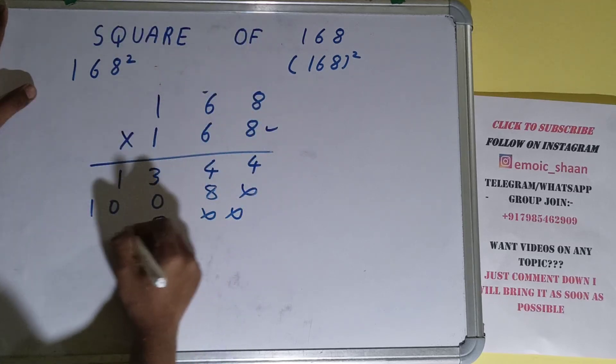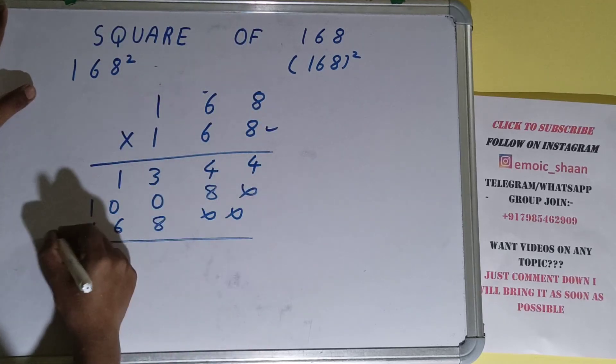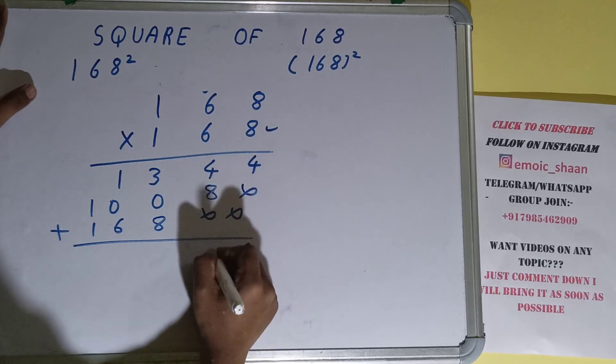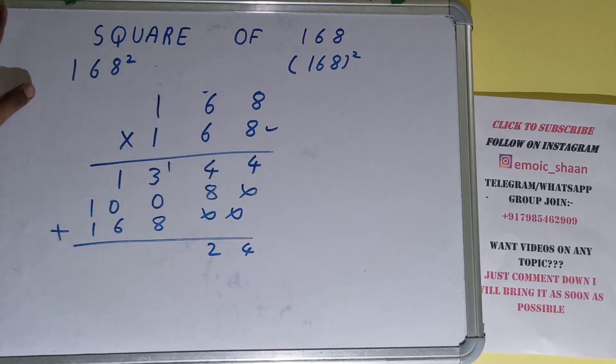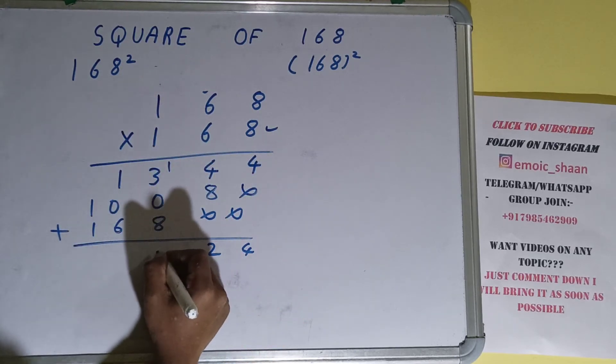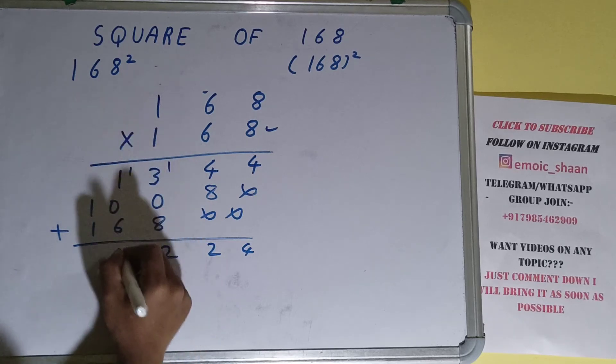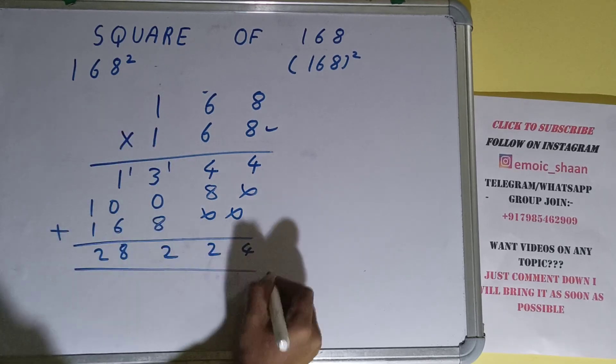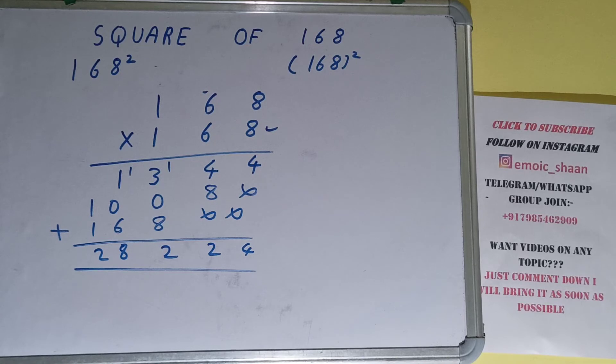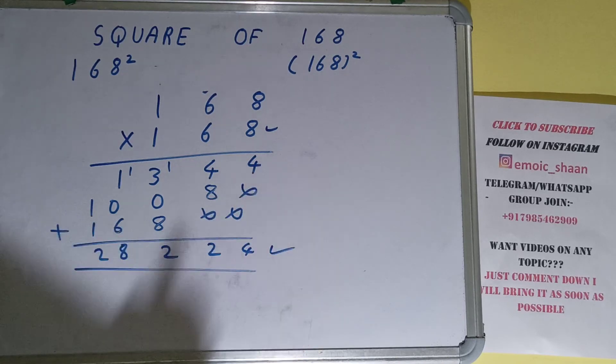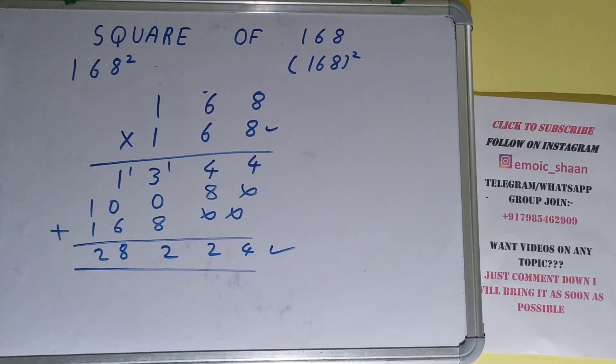1, 8, 8; 1, 6, 6; 1, 1, 1. Just add them all: 4, 2, 1, 2, 8, 2. The answer will be 28,224. That will be the square of the number 168.